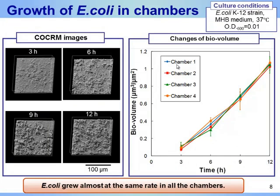We observed the growth of bacteria in the device without any antibiotics. We used E. coli K12 strain as bacteria. These pictures show COCRM images taken every 3 hours after injection. The increase in the number of cells was clearly observed. We also analyzed the biovolume based on these images. The graph shows the change of biovolume every 3 hours, and E. coli grew at almost the same rate in all the chambers.